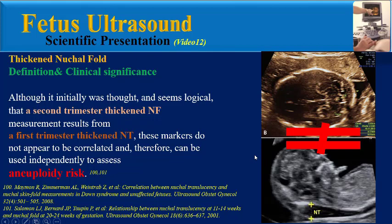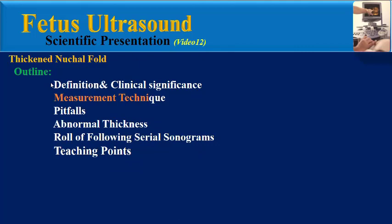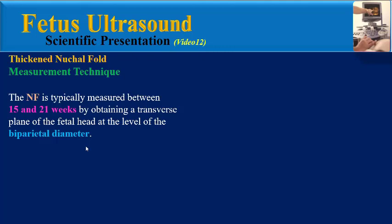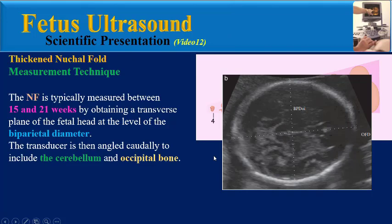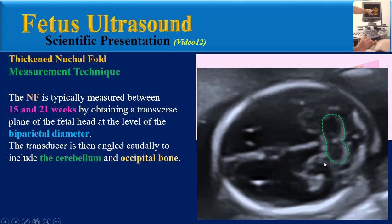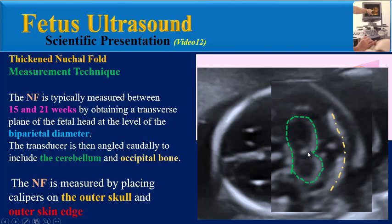What is the measurement technique for nuchal fold? The NF is typically measured between 15 and 21 weeks by obtaining a transverse plane of the fetal head at the level of the biparietal diameter. The transducer is angled caudally to include the cerebellum and occipital bone. The NF is measured by placing the calipers on the outer skull and outer skin edge.